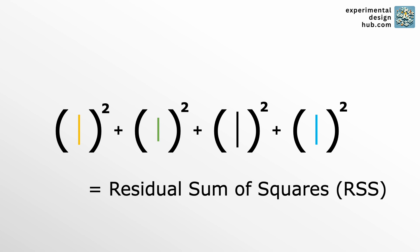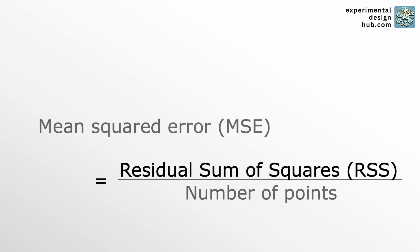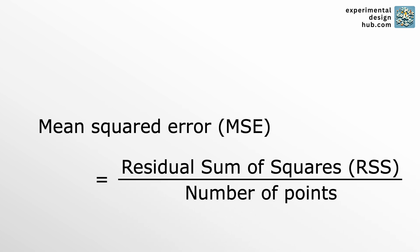But there's a catch. RSS isn't really standardized, so its value can change depending on the scale of your data and how many data points you have. That makes it hard to compare across different models or data sets. A much better way is the mean squared error. It is the RSS divided by the number of measuring points. That makes it independent from the number of data points, but scale will still influence it.